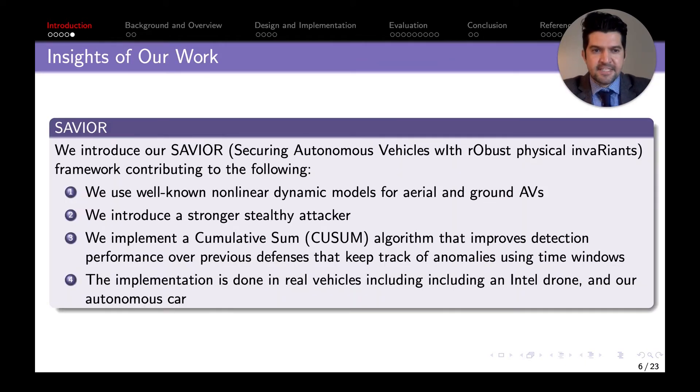The main insight of our work is that we're introducing SAVIER, which stands for Securing Autonomous Vehicles with Robust Physical Invariance. We contribute the following four points: we use well-known nonlinear models to describe the behavior of ground and aerial vehicles, we introduce a strong attacker able to perform stealthy attacks, we implement a cumulative sum algorithm that improves detection performance over previous approaches, and we implement this into two actual hardware devices—a real drone and a real vehicle.